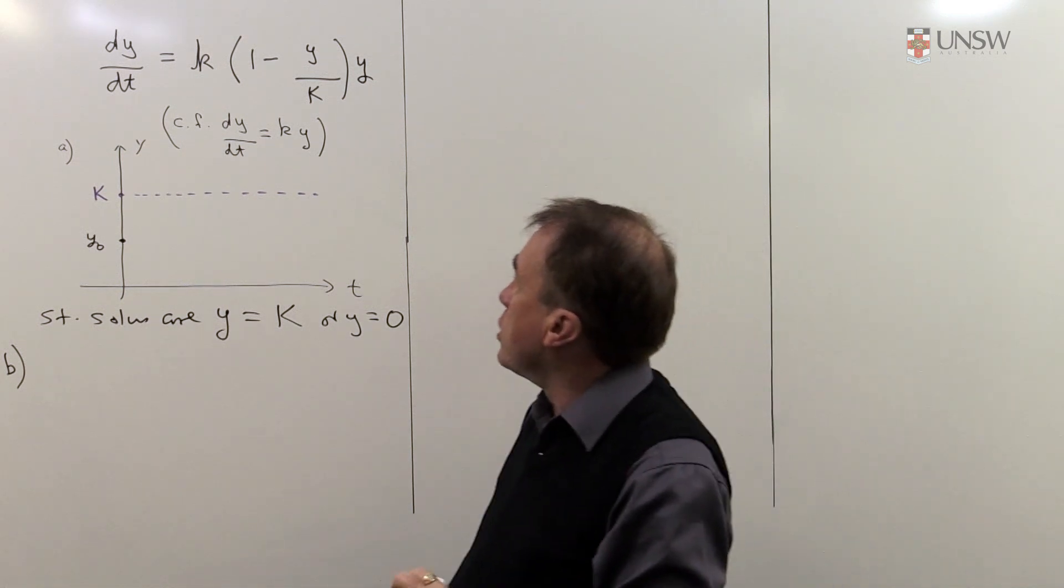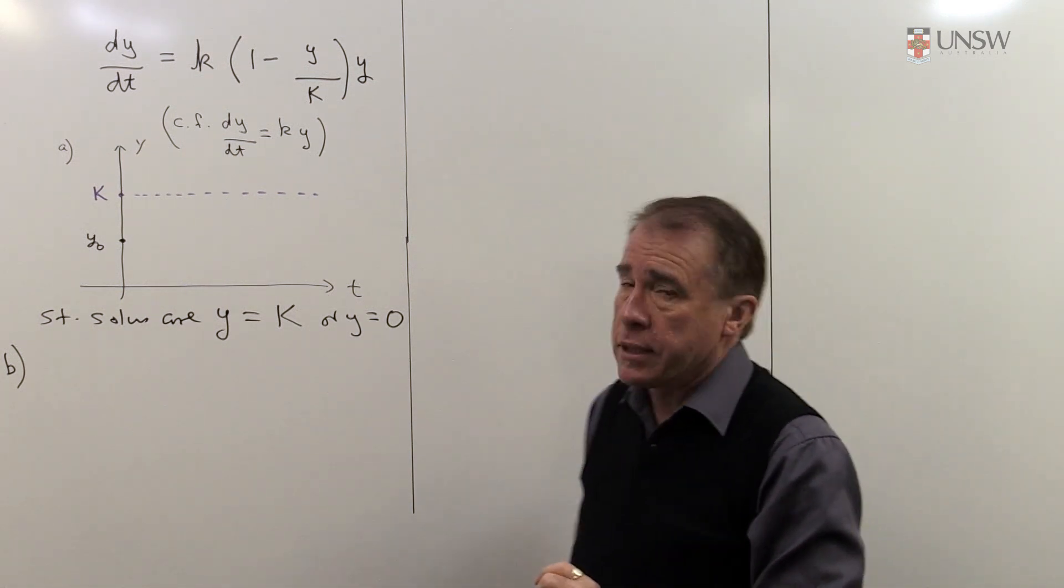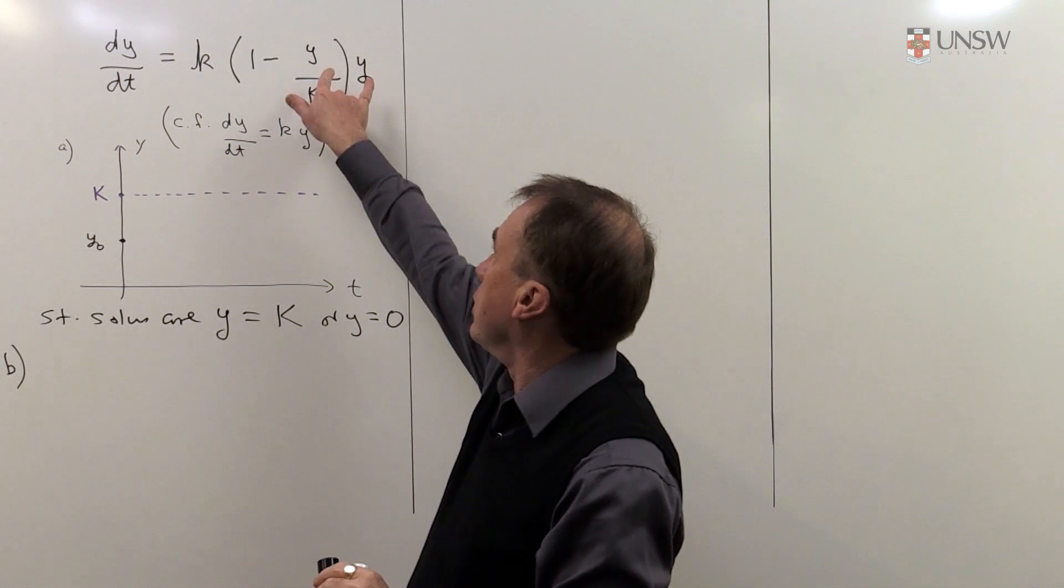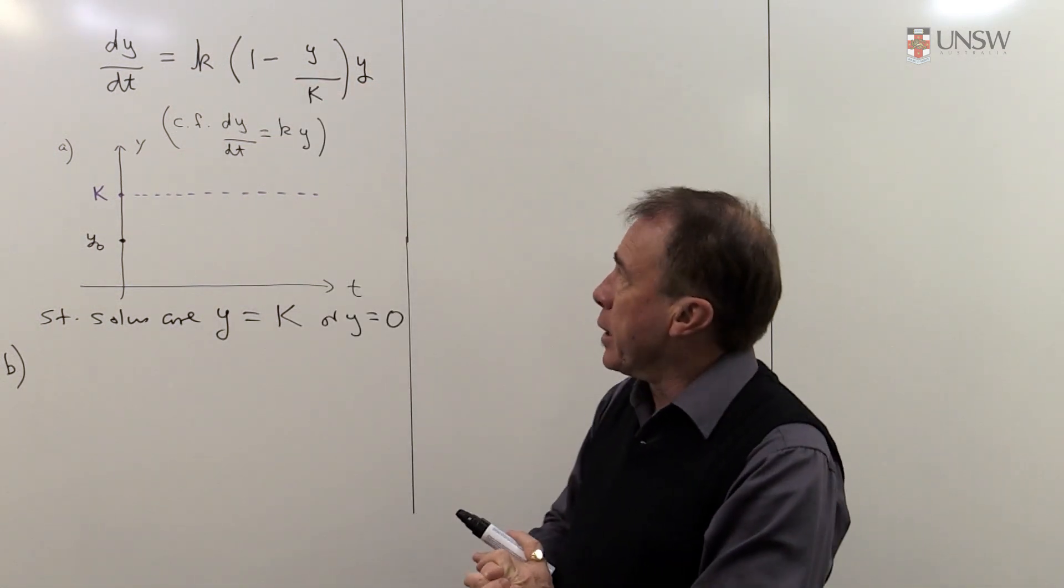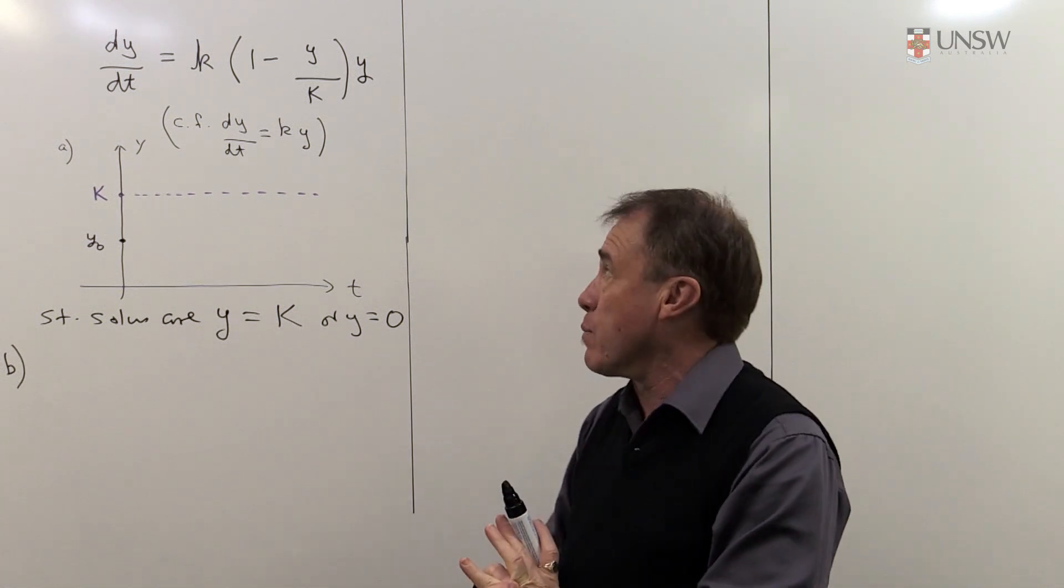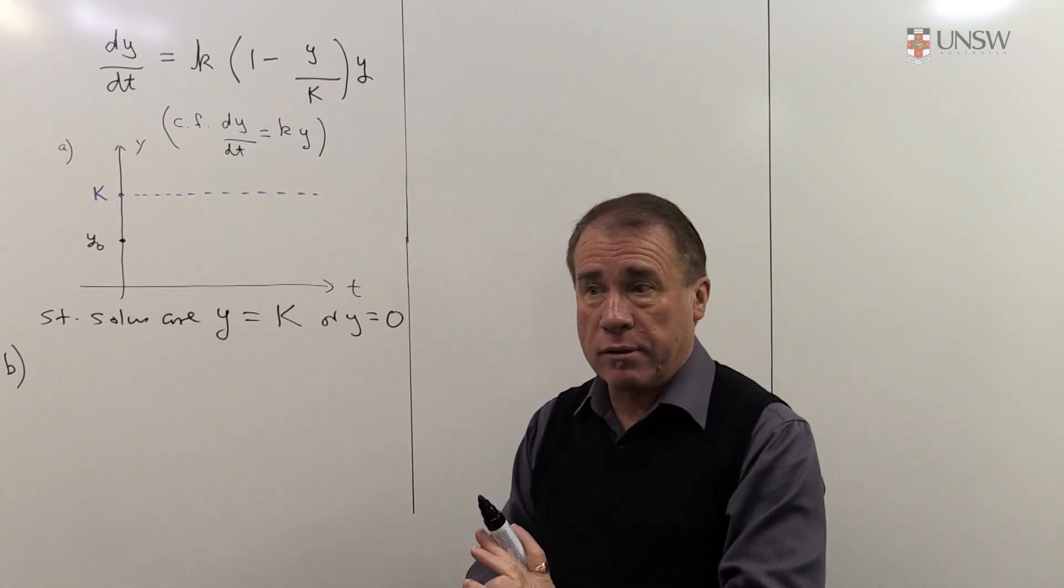Well, you look at the differential equation and you see that it's obviously not linear because of the y squared term there, and it looks like it might be separable. And so the idea is we're going to separate the variables and then integrate.